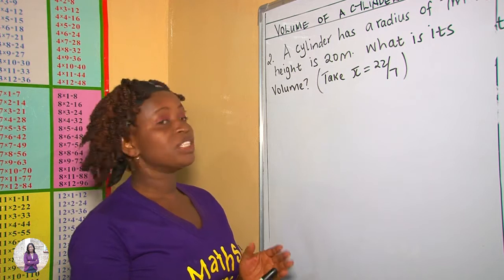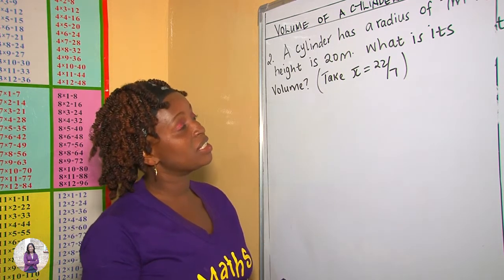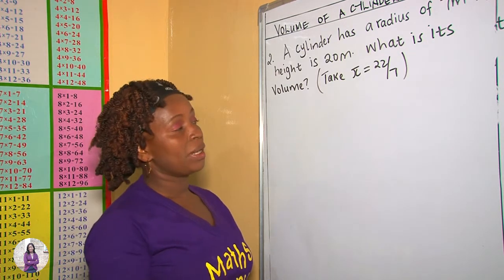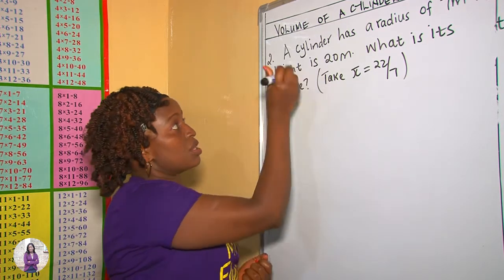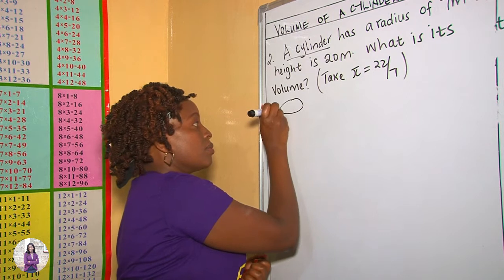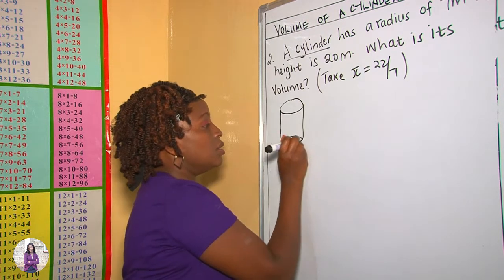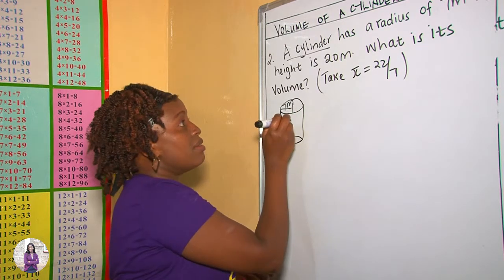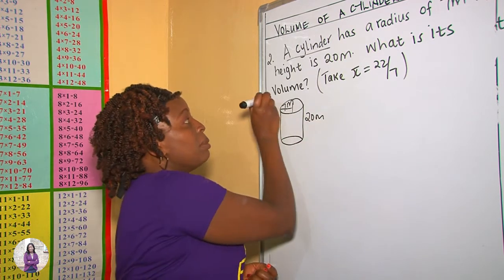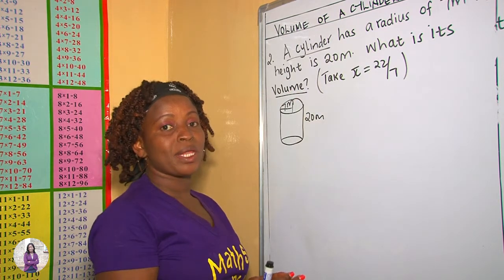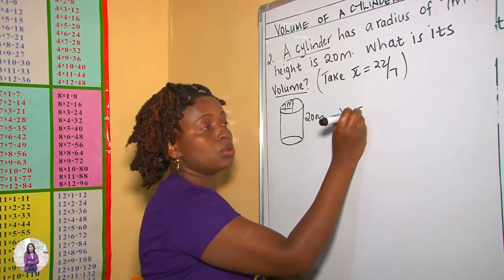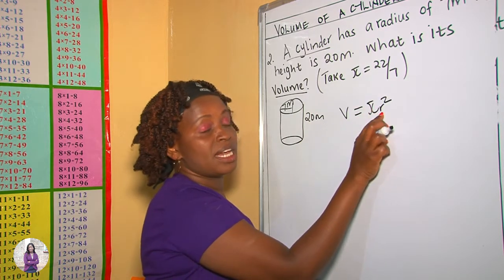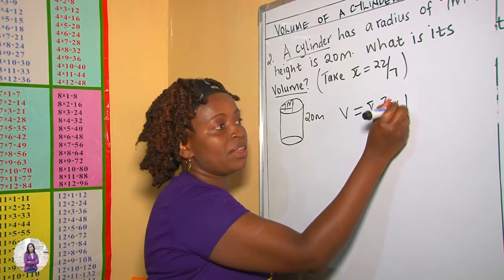In our second example, we are told that a cylinder has a radius of 70 meters and its height is 20 meters. What is its volume? Pi is given as 22 over 7. This is a cylinder. We are given the radius of 70 meters and the height is 20 meters. We are being asked about the volume. Therefore, we apply the formula: volume is equal to cross-sectional area, which is pi r squared — this is the area of the base, which is a circle — multiplied by the height.